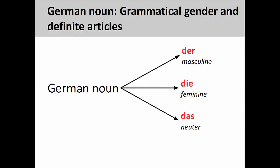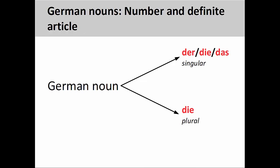You will recall from an earlier presentation that the grammatical gender of a noun is seen in its definite article. Der indicates a masculine noun, Die a feminine noun, and Das a neuter noun. You will also remember that plural nouns manifest no gender — the only definite article for plural nouns is Die.